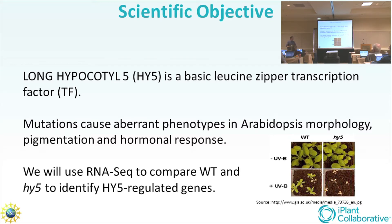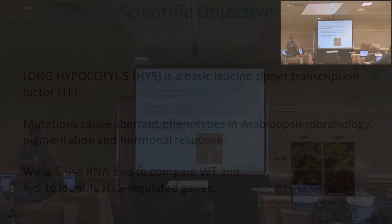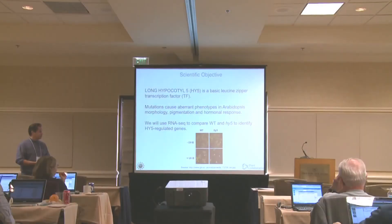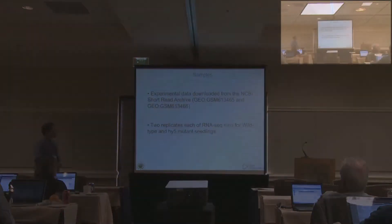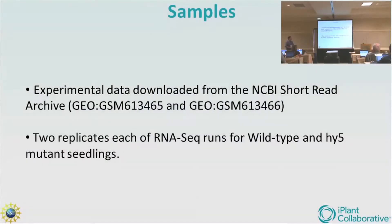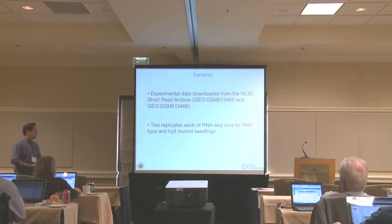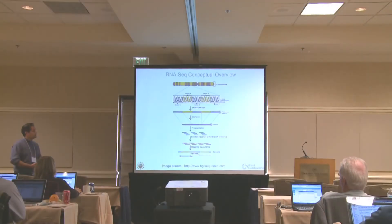This being a transcription factor, we expect there to be some kind of regulatory cascade — a lot of genes that are affected downstream when we knock out the Hi5 transcription factor. I got the original experimental data from the NCBI sequencing read archive, and there are two replicates each for wild type and Hi5 mutant seedlings.